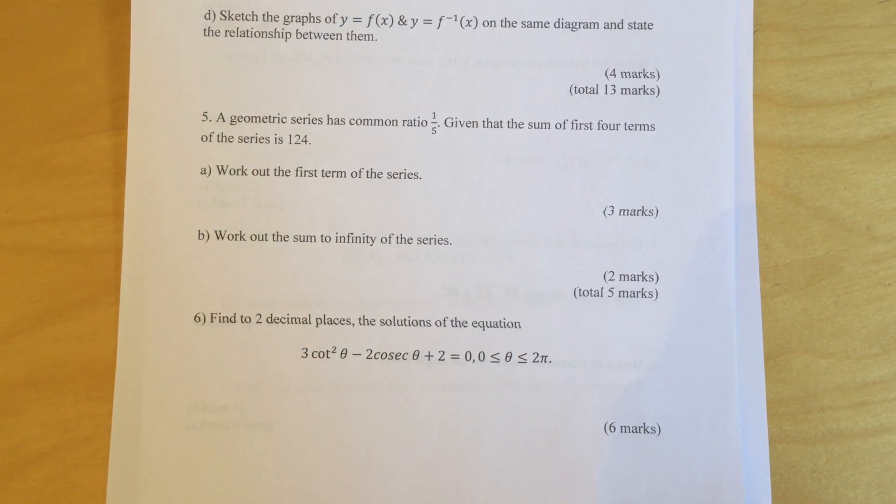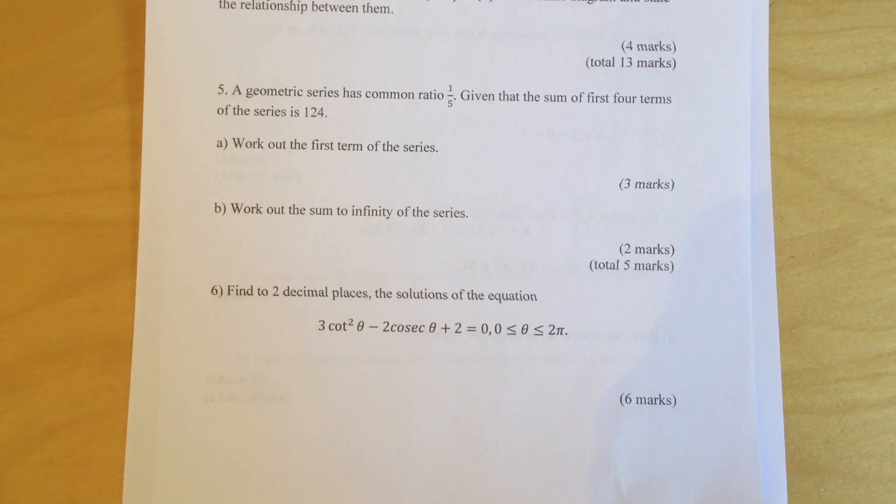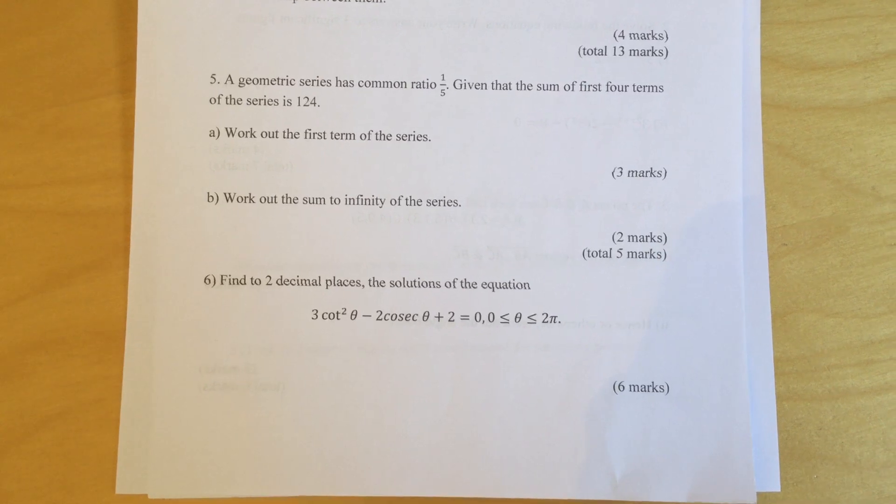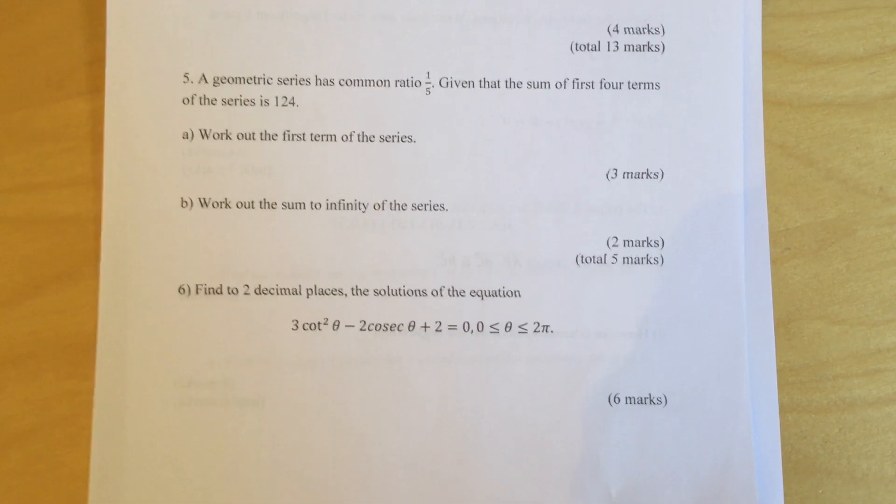Question 6: Find to 2 decimal places the solutions of the equation 3cot²θ - 2cosθ + 2 = 0, where θ is between 0 and 2π.